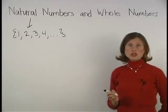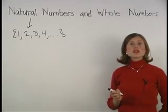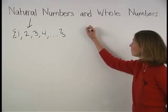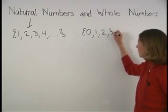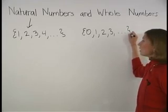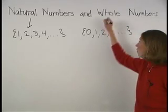When we include 0 in the set of natural numbers, the new set, 0, 1, 2, 3, and so on, is called the set of whole numbers.